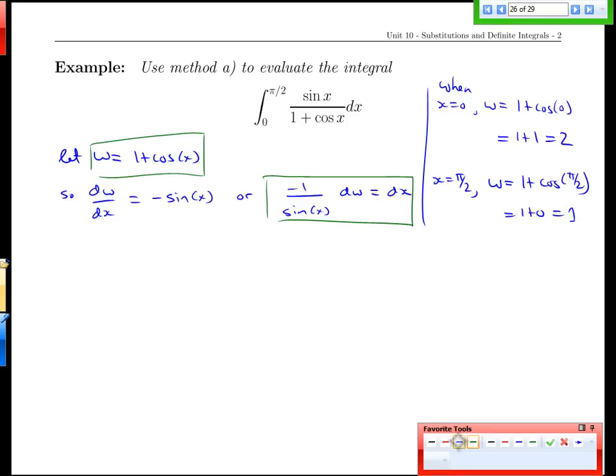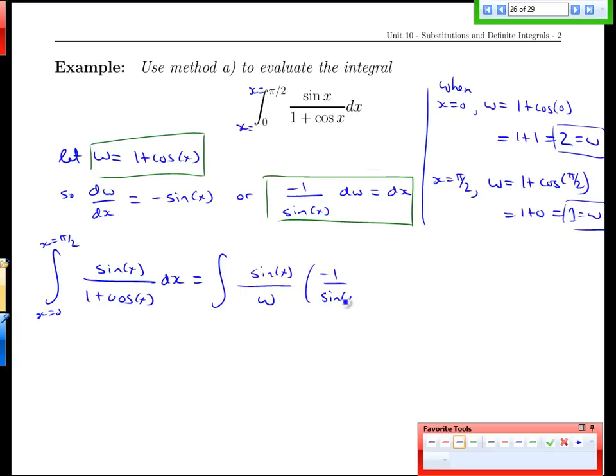So our integration is from x equals 0 to x equals pi over 2 to start with, or from w equals 2 to w equals 1. Let's see how we can convert our whole integral. x equals 0, x equals pi over 2, sine of x over 1 plus cos of x, dx. That gets converted to 2. Sine of x we didn't have a change for, but 1 plus cos of x, the whole entire denominator was w, so 1 plus cos of x is w, and the dx is negative 1 over sine of x, dw.